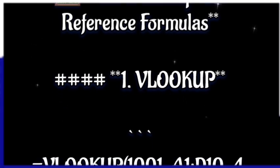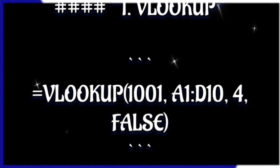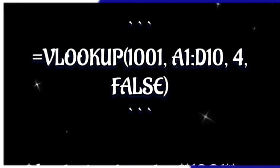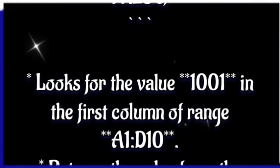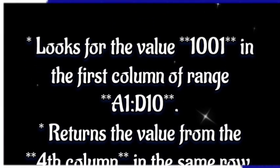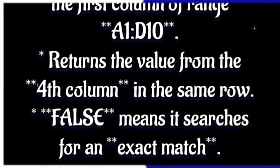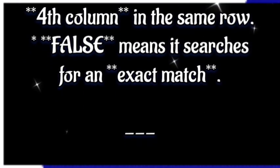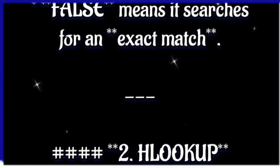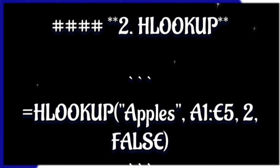Number one: VLOOKUP. VLOOKUP(1001, A1:D10, 4, FALSE) looks for the value 1001 in the first column of range A1:D10, and returns the value from the fourth column in the same row. FALSE means it searches for an exact match.